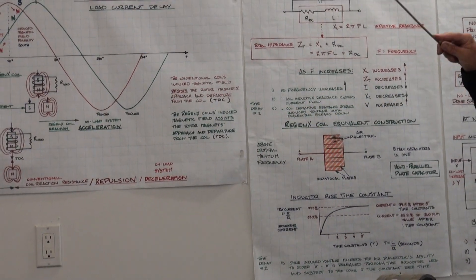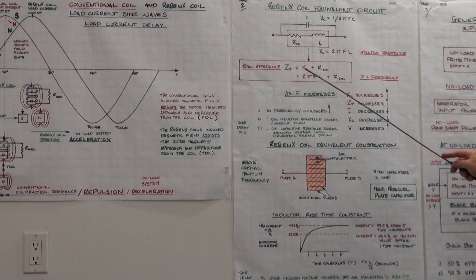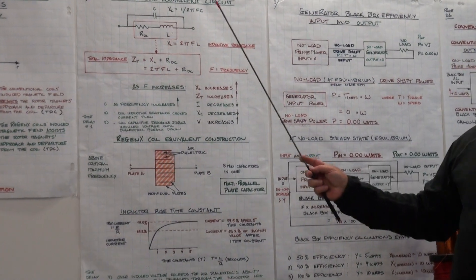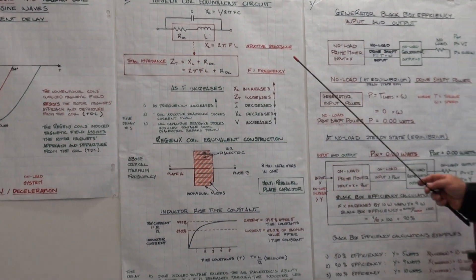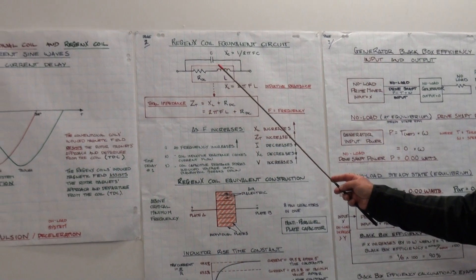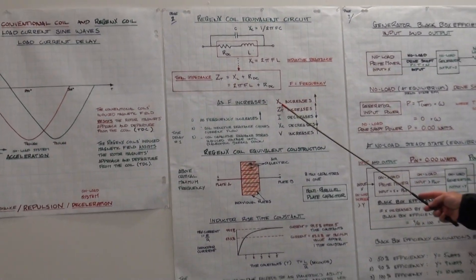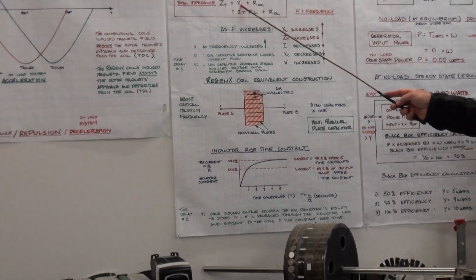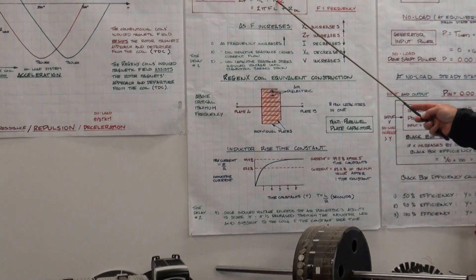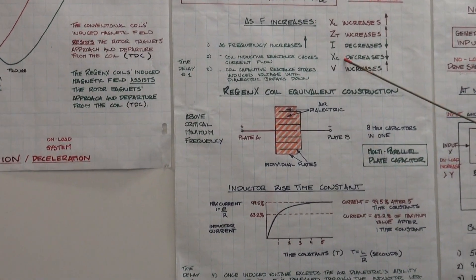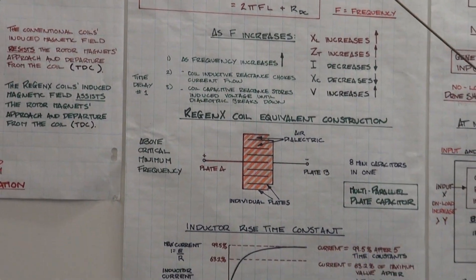What you saw when we were operating at a higher frequency and a lower frequency — the only parameter we were changing was the frequency of operation of the coil, so we were changing the inductive reactance. As frequency increases, the inductive reactance increases because it's a function of frequency. The total impedance of the coil increases, being the inductive reactance plus the DC resistance. The current in the coil decreases because the total impedance is going up. The capacitive reactance of the coil goes down.